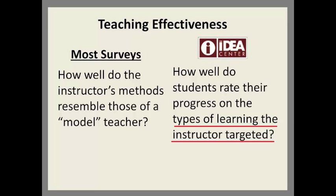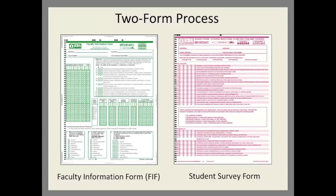Your results will reflect how well students make progress on the types of learning you target. That's why the IDEA system uses two forms, one for faculty and one for students. Here you see the paper version of the Faculty Information Form on the left, the green form — sometimes referred to as the FIF. The Student Diagnostic Survey Form is on the right, the maroon form.